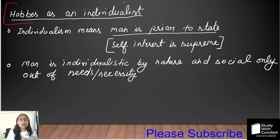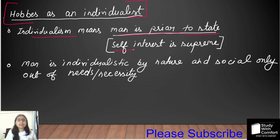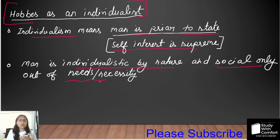Let's simplify what individualism means here. The basic meaning of individualism is that the individual is prior to the state — the individual comes first. Individualism's basic meaning is that individual self-interest is supreme. Hobbes says that man is individualistic by nature, meaning the individual's interests come first. Man is social only out of necessity; otherwise, man is individualistic by nature.